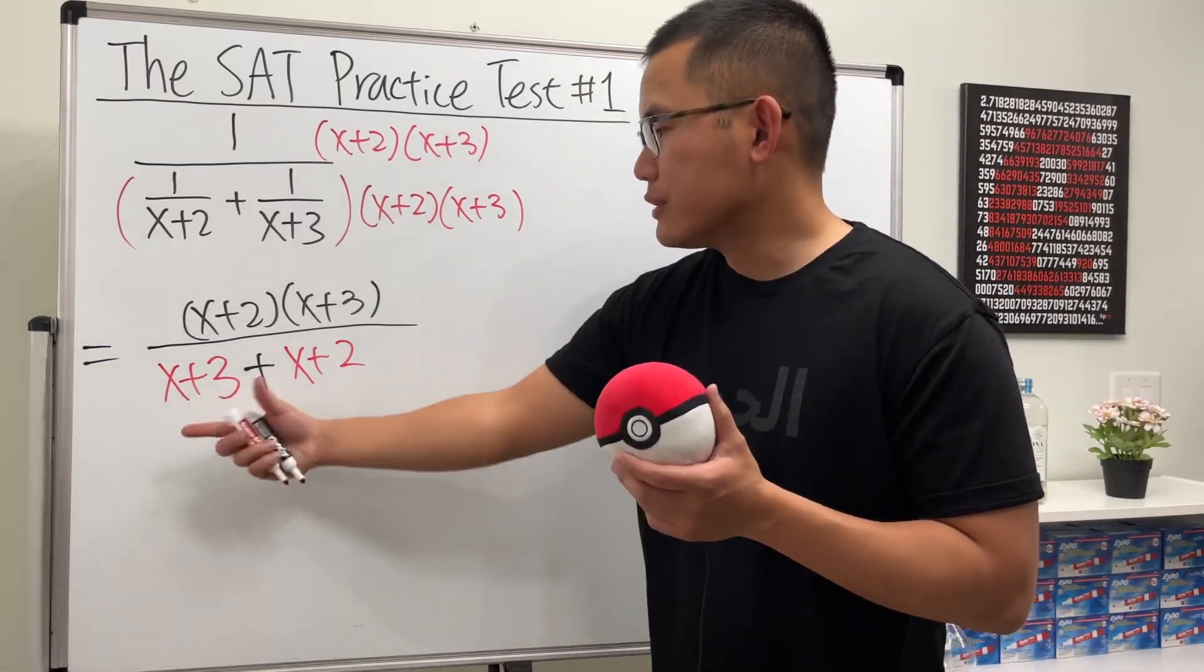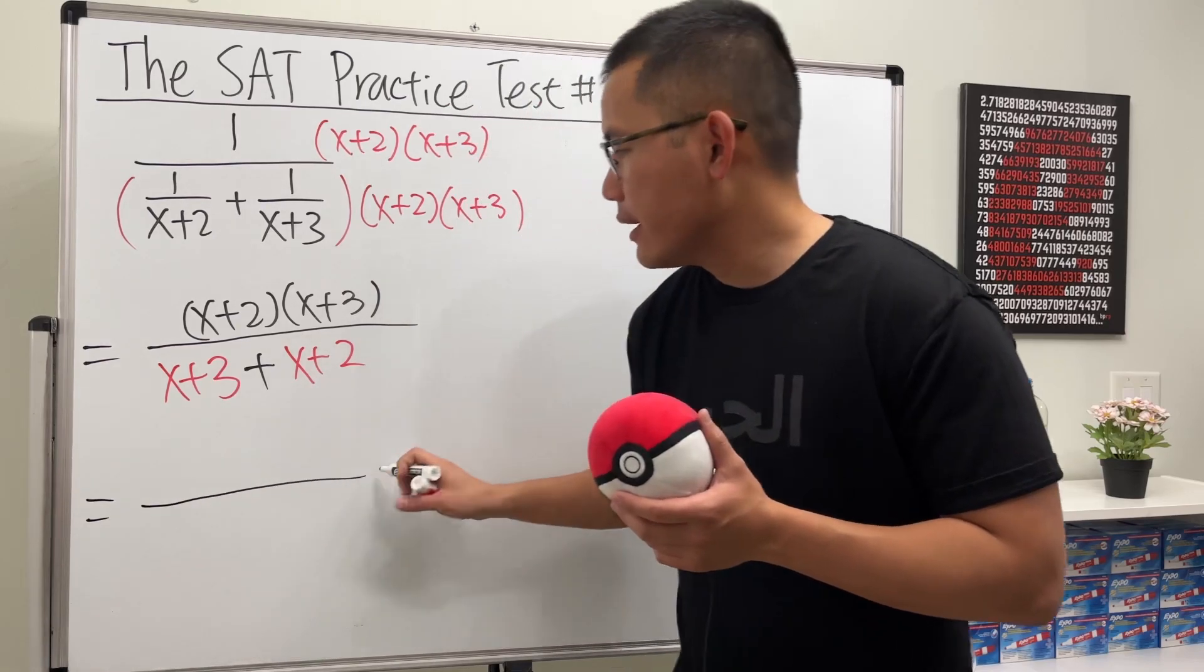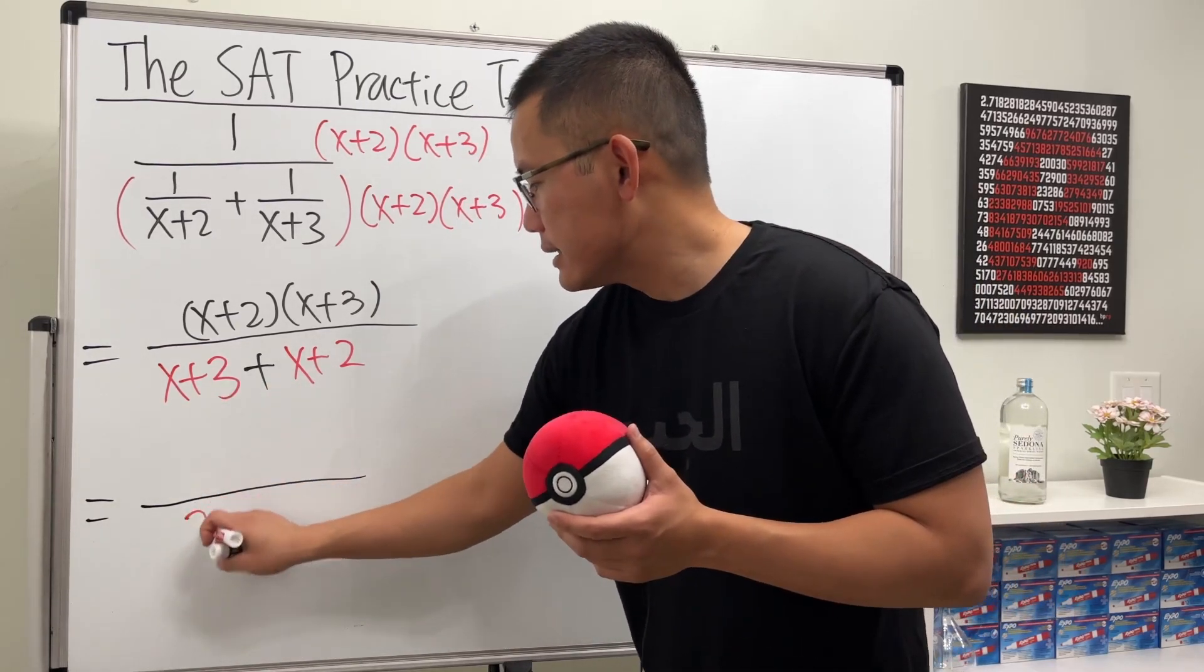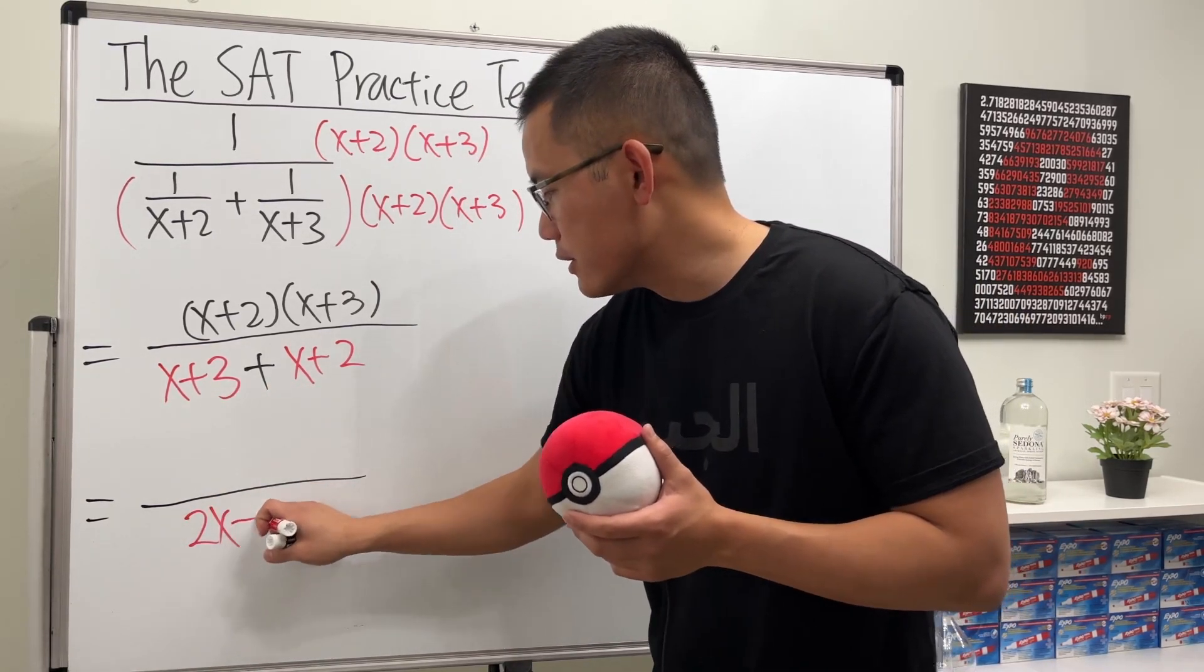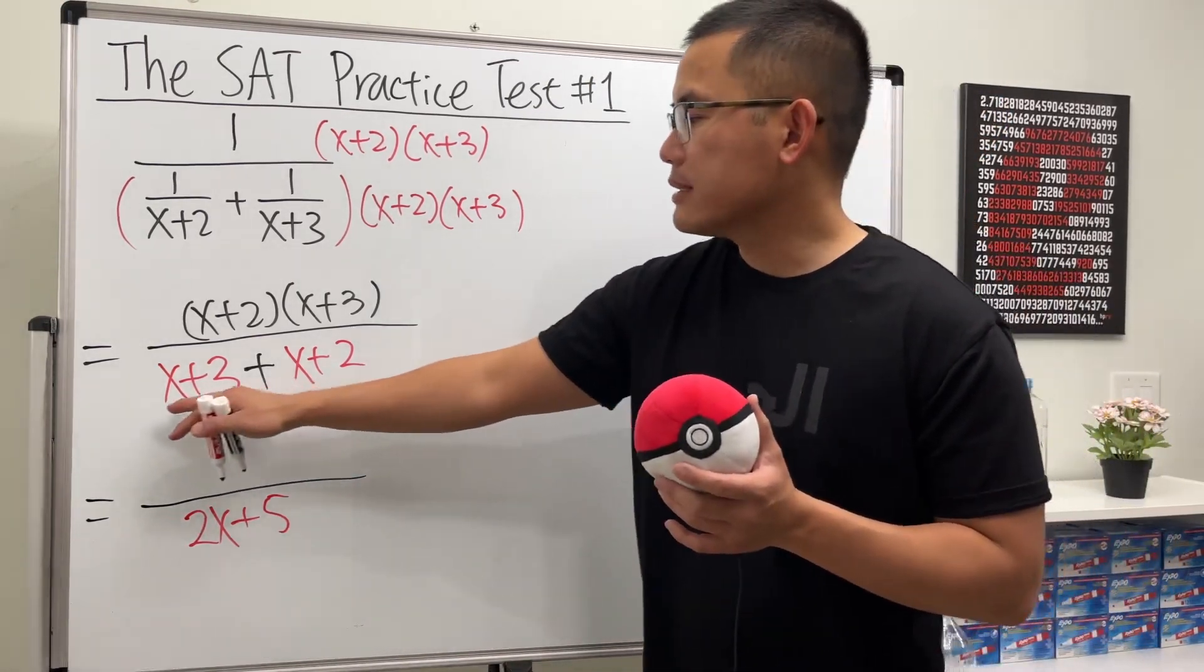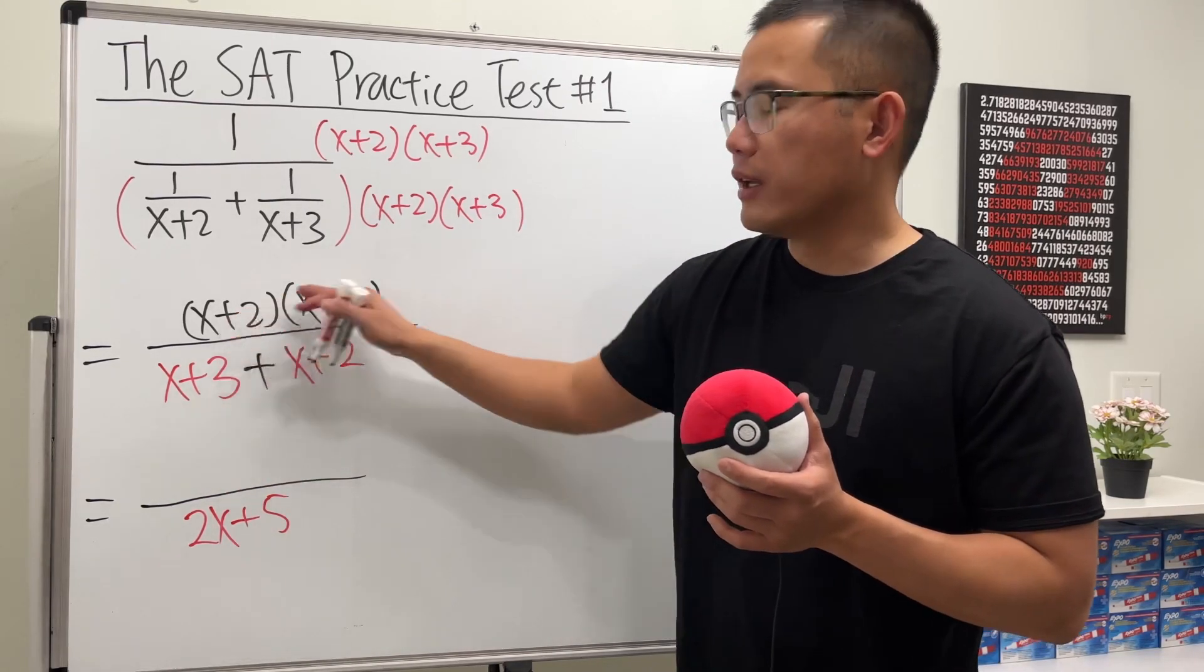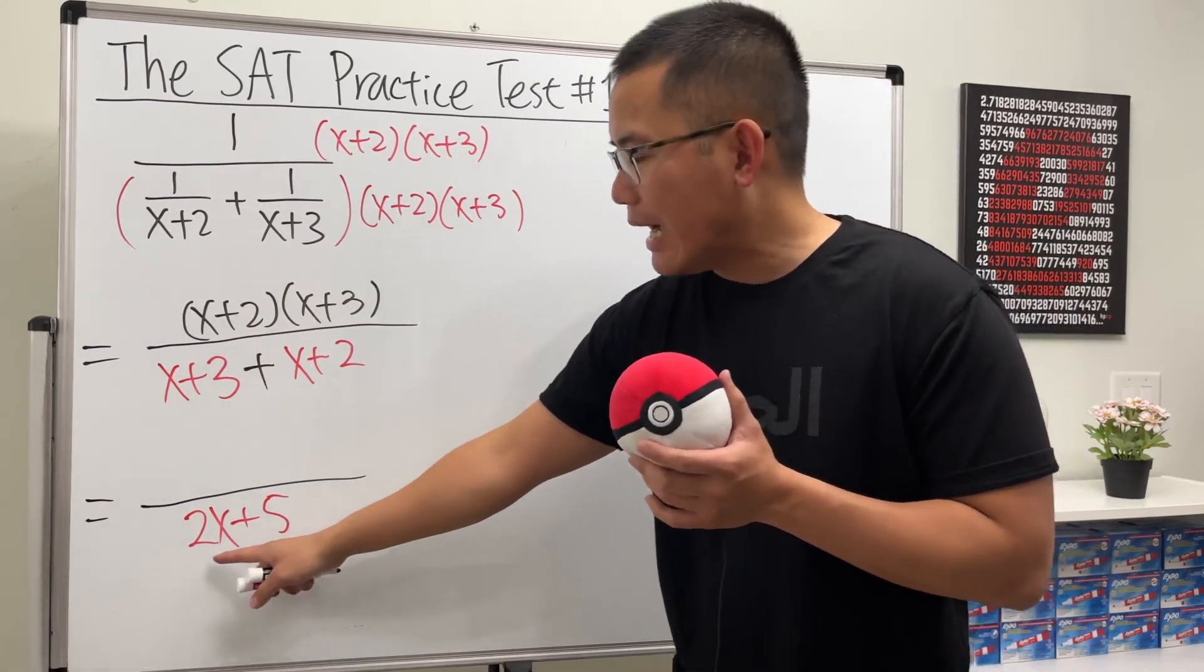We just have to combine like terms, and we will just get 2x and then 5. By the order of operations, we must have combined this first before we can see if we can cancel anything. Here we have 2x+5 and this is x+2 times x+3—nothing is in common.